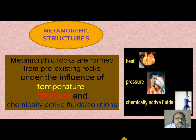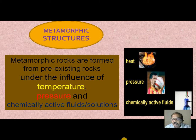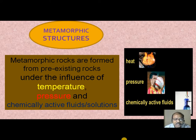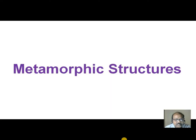Prior to that, how are the metamorphic rocks formed? The metamorphic rocks are formed from the pre-existing rocks — that means either igneous rocks or sedimentary rocks — under the influence of three parameters: one is heat, second one is pressure, and third one is chemically active fluids or solutions.